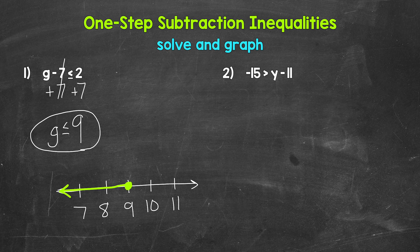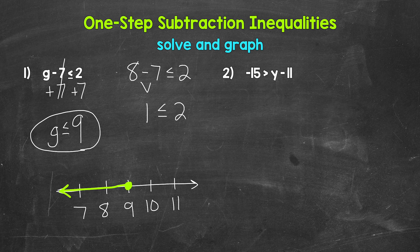One last thing we can do is check a solution to make sure we are correct. We need any value less than or equal to nine — let's try eight. Plugging in eight for g: eight minus seven is less than or equal to two. Eight minus seven gives us one, and one is less than or equal to two, so we are correct. Let's also check nine: nine minus seven gives us two, and two is less than or equal to two. So nine works as well. Our answer is g is less than or equal to nine.